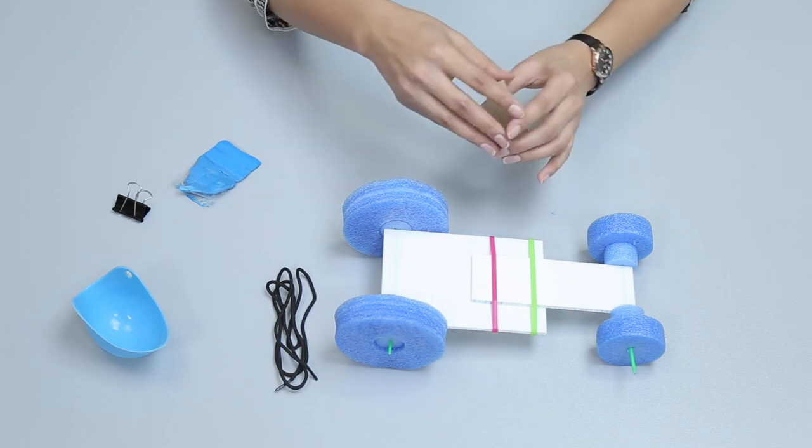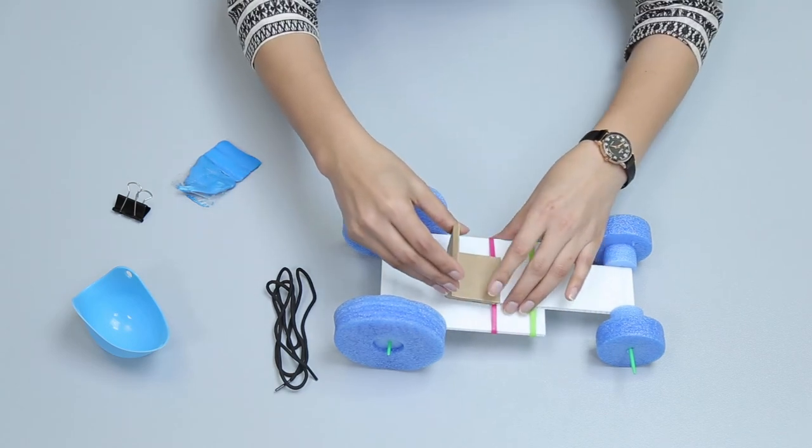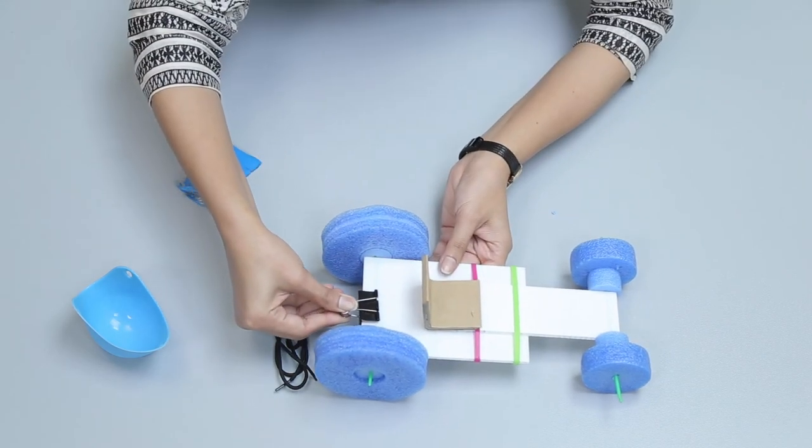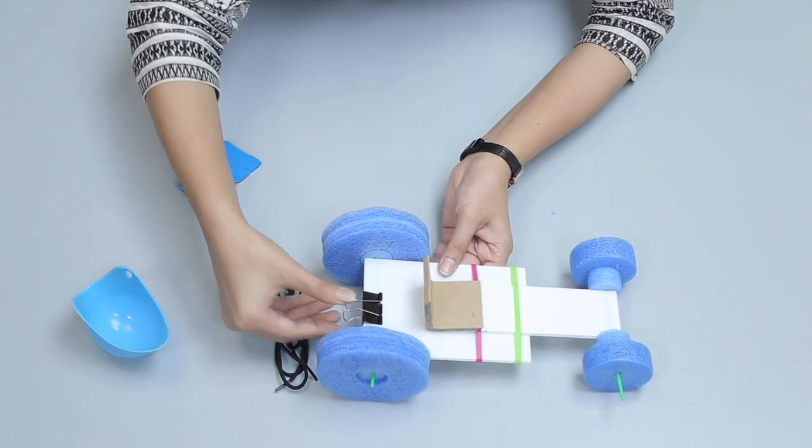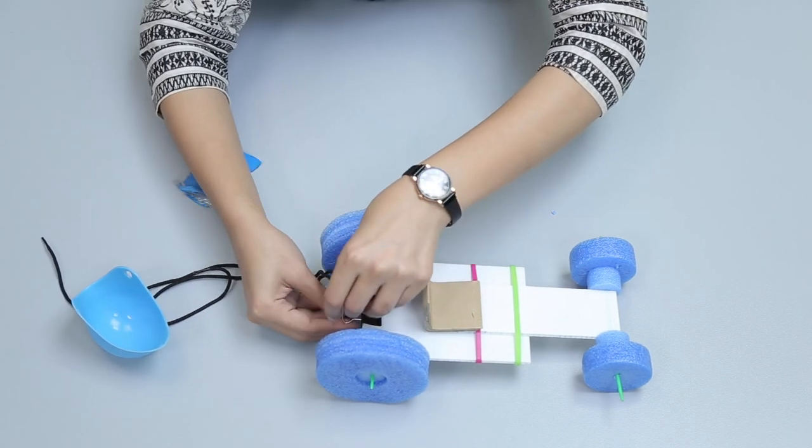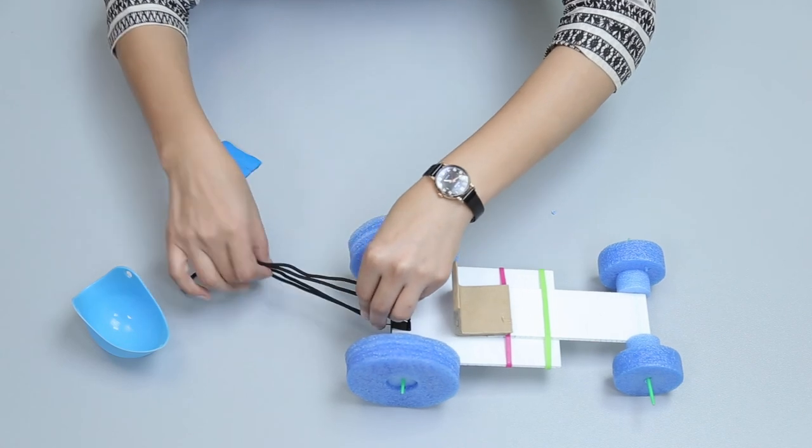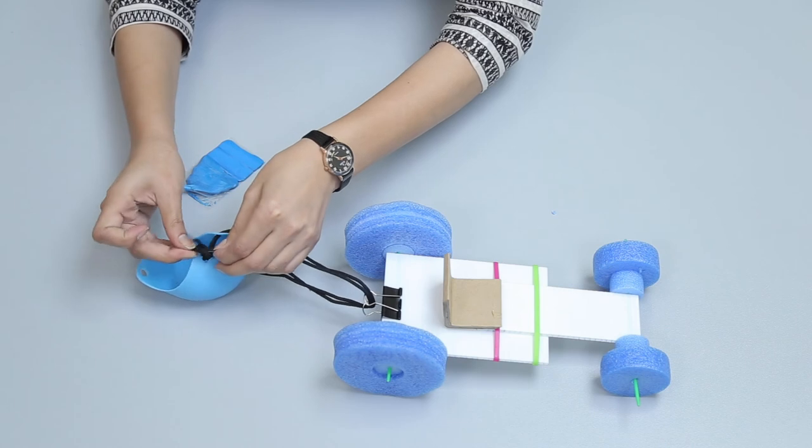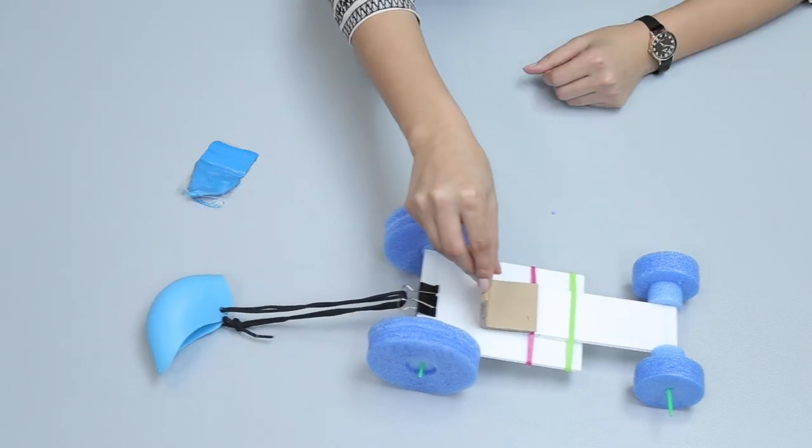Attach the fold back clip on the back side of the car. For making the parachute of drag racer car, tie the silicone poaching cup to the fold back clip using shoelace. Your drag racer car is ready to go.